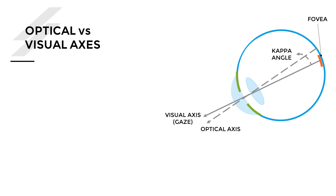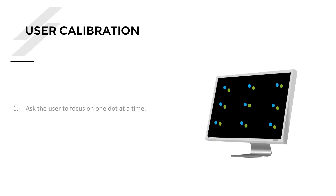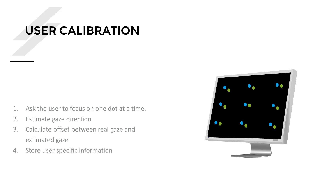The angle between the visual axis and the optical axis is called the kappa angle, or sometimes the alpha angle in literature. We are interested in the visual axis, but it is impossible to estimate it directly from images, so we need user-specific calibration. Usually this angle kappa is about five degrees. The calibration process is simple: you ask the user to focus on one dot at a time, estimate the gaze direction, calculate the offset between the real and estimated gaze, and store this user-specific information to correct future estimates.